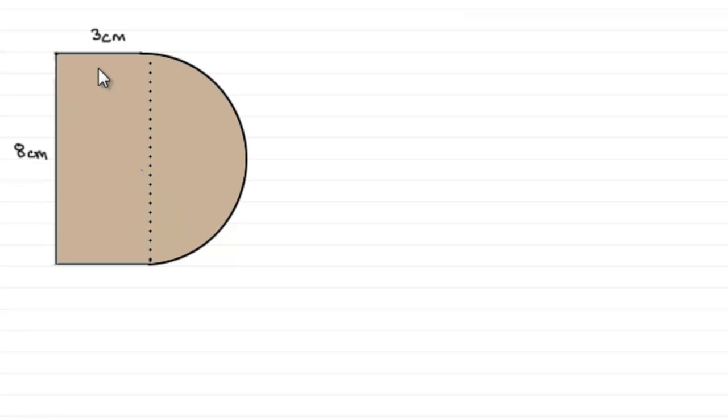Now I've got a laminar here that consists of a rectangle joined to a semicircle. And you might like to have a go at trying to find where the center of mass will be for this particular laminar.